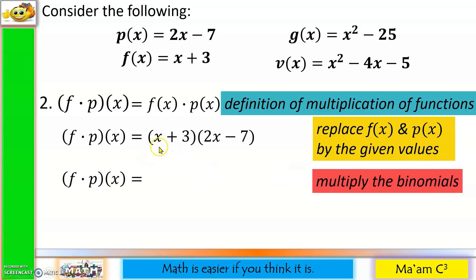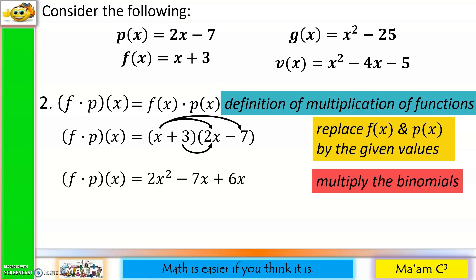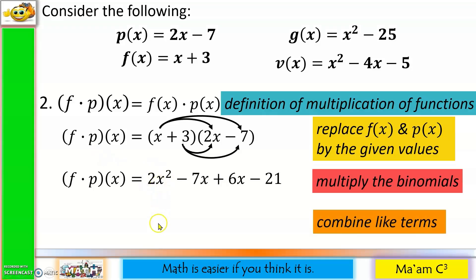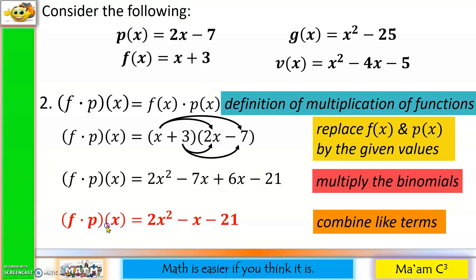Third step: multiply the binomials. x · 2x = 2x², x · (−7) = −7x, 3 · 2x = +6x, and 3 · (−7) = −21. Combining like terms: −7x + 6x = −x. So the final answer for (f · p)(x) is 2x² − x − 21.